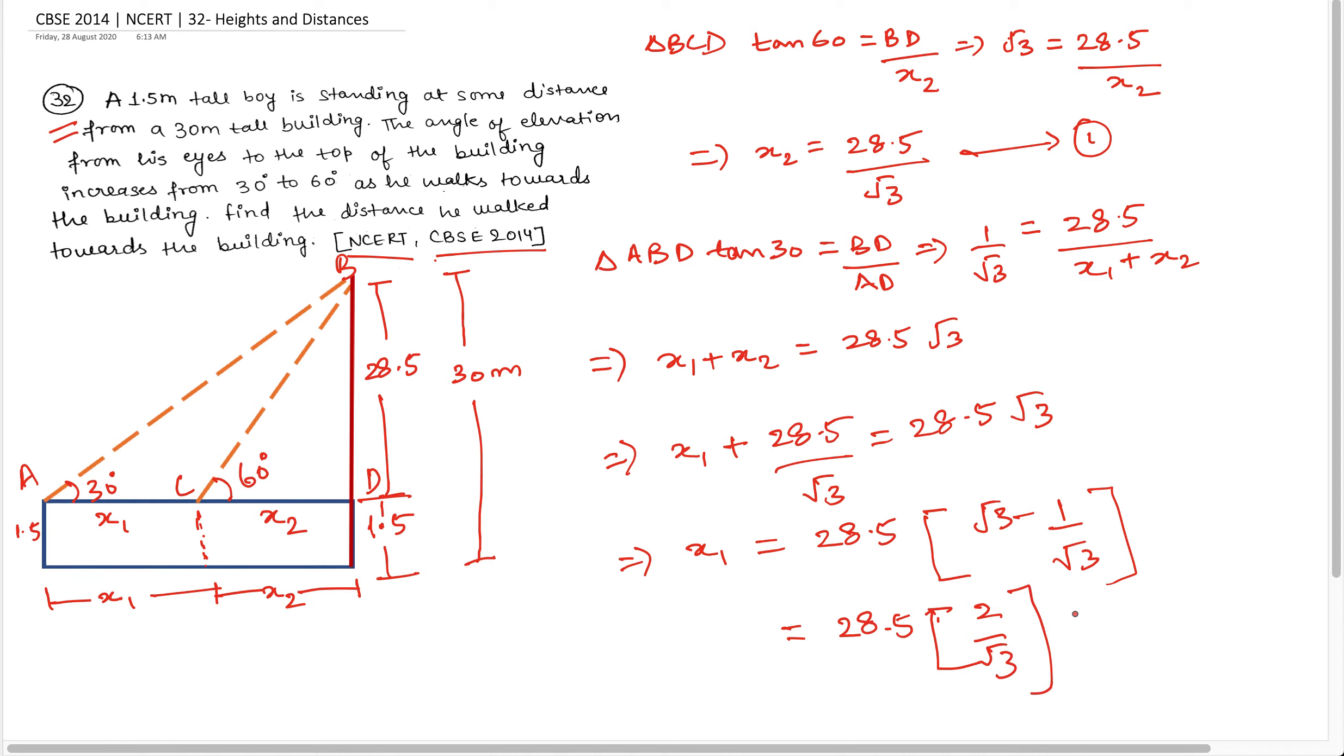अब इसे मैं उपर-नीचे दोनो root 3 से multiply कर दूँ, तो यह बन जाता है 57 root 3 by 3 या फिर x1 की value बन जाएगी 19 root 3. x1 की value है 19 root 3.